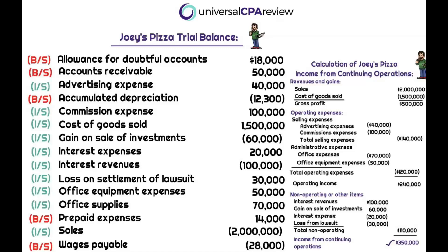We've got to be prepared to take information from a trial balance and put together a multi-step income statement — that's the 101. We need to get through tough questions and task-based simulations. Beyond that, we need to know the sneaky items: differences between selling and administrative expenses, and what's classified as operating versus non-operating on the income statement.